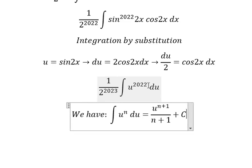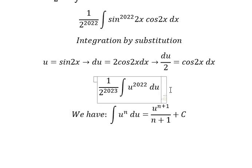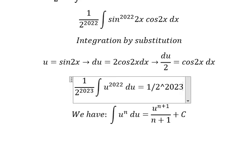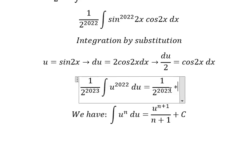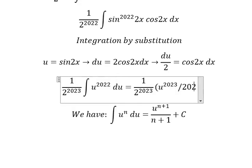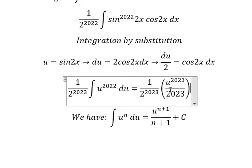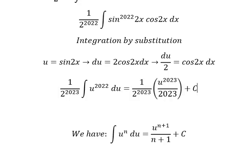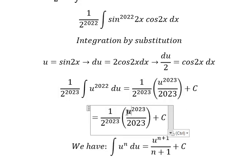So we put 2022 here, 2022 plus 1 gives us 2023. We get 1 over 2 to the 2023 times sine 2x to the 2023 over 2023 plus C. The formula is integral of u to the n equals u to the n plus 1 over n plus 1 plus C.